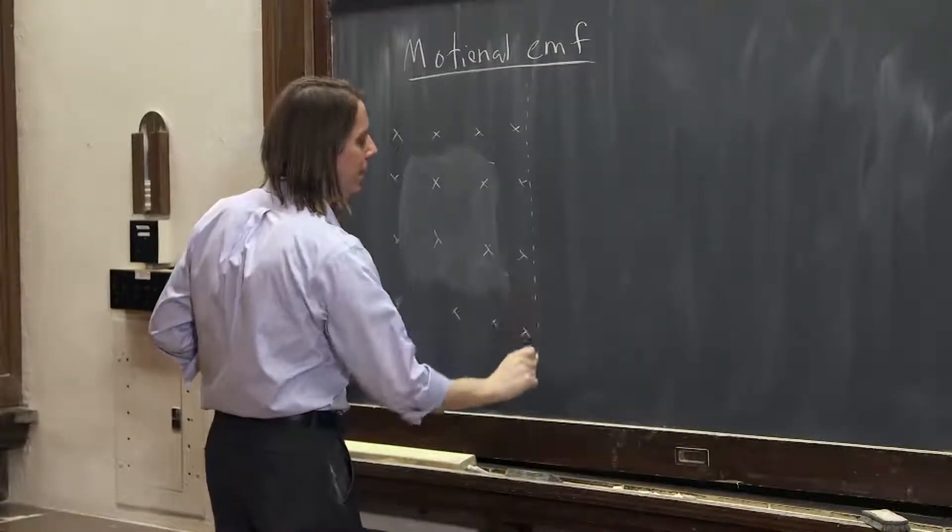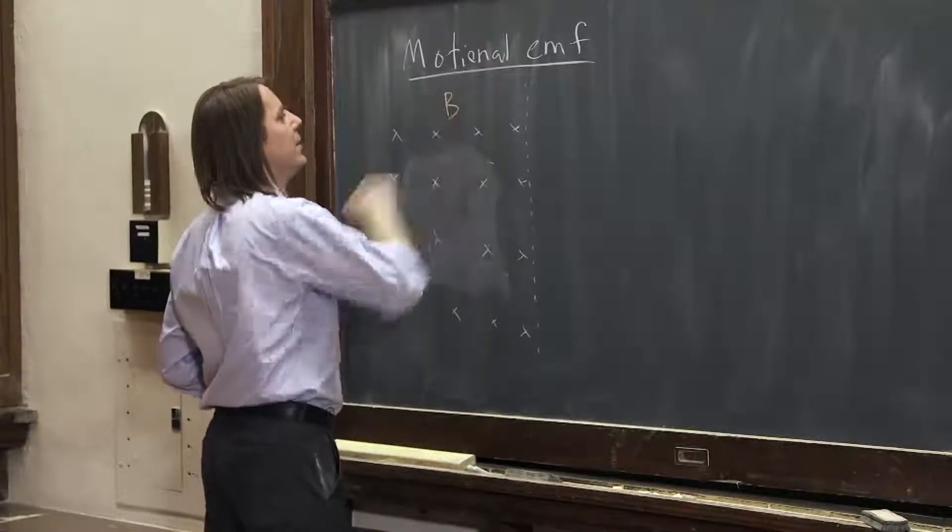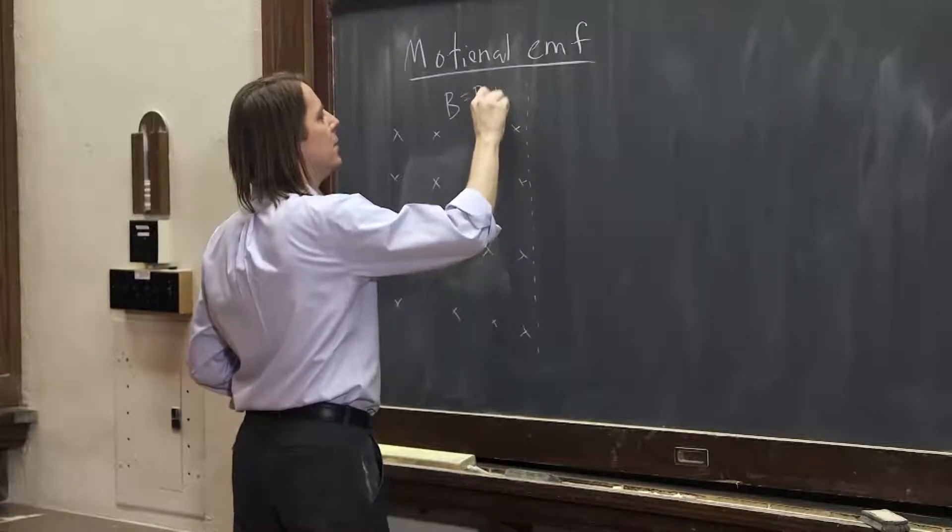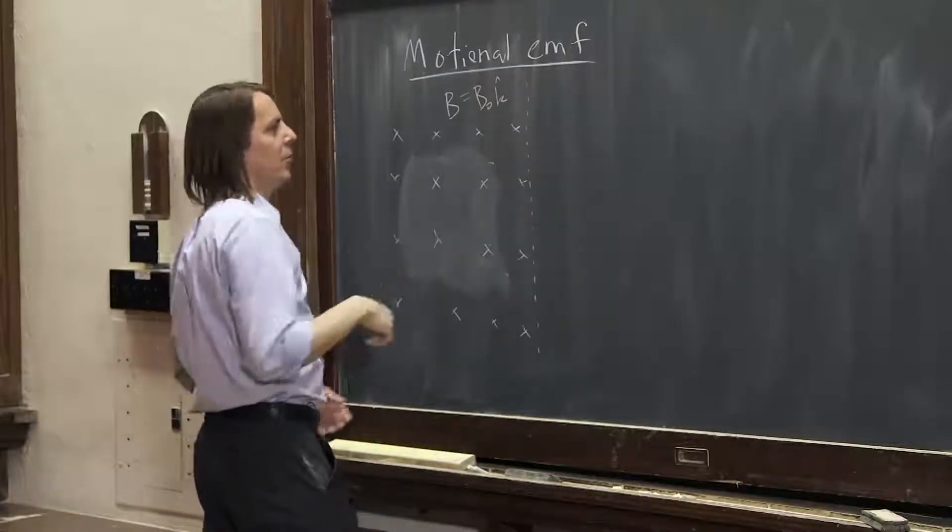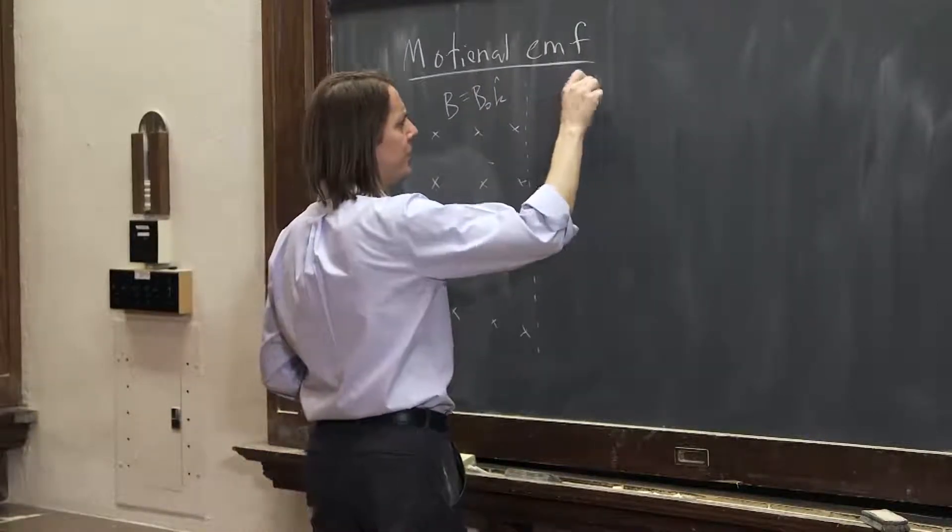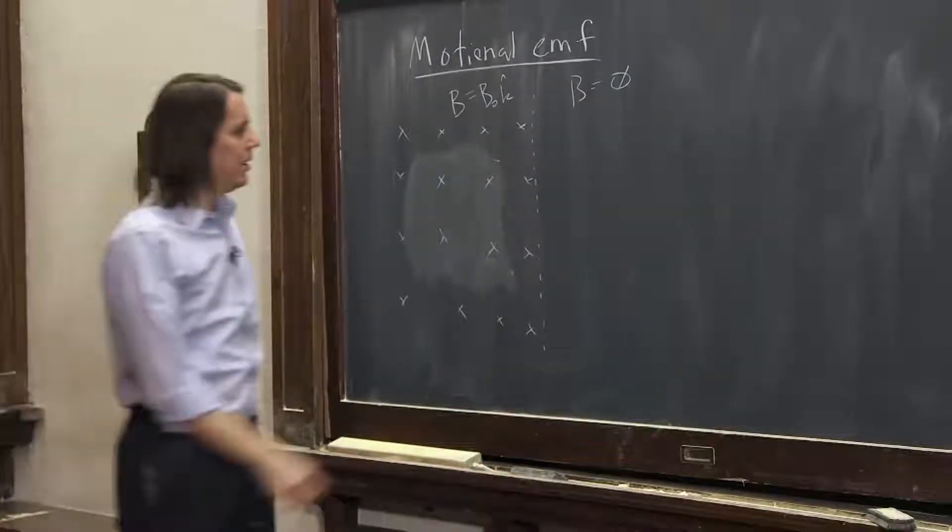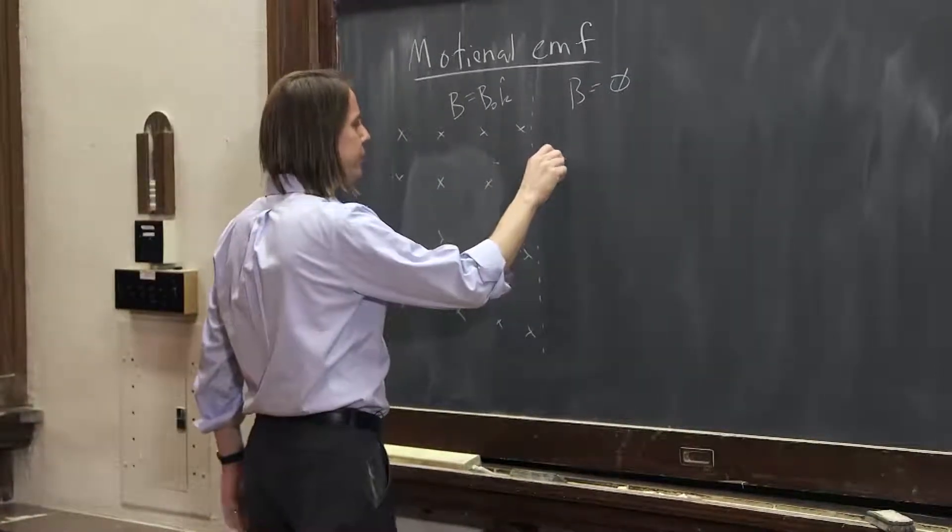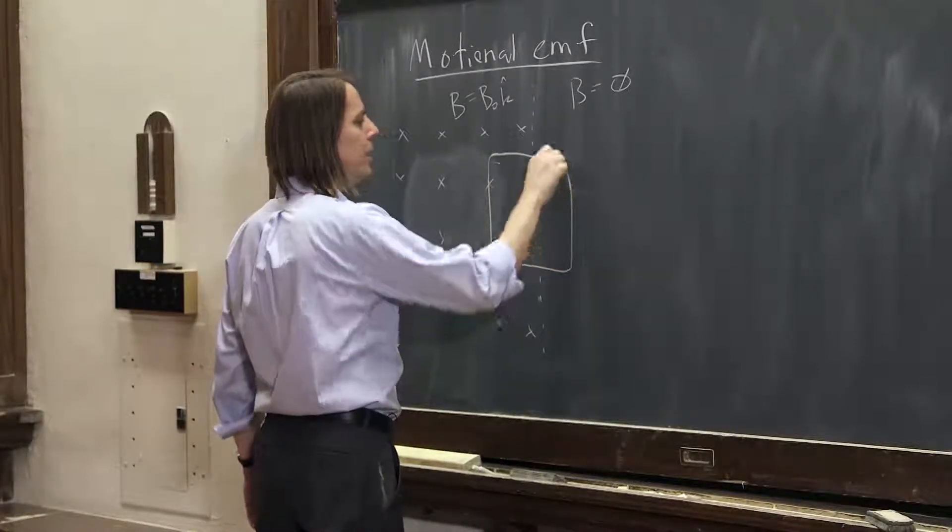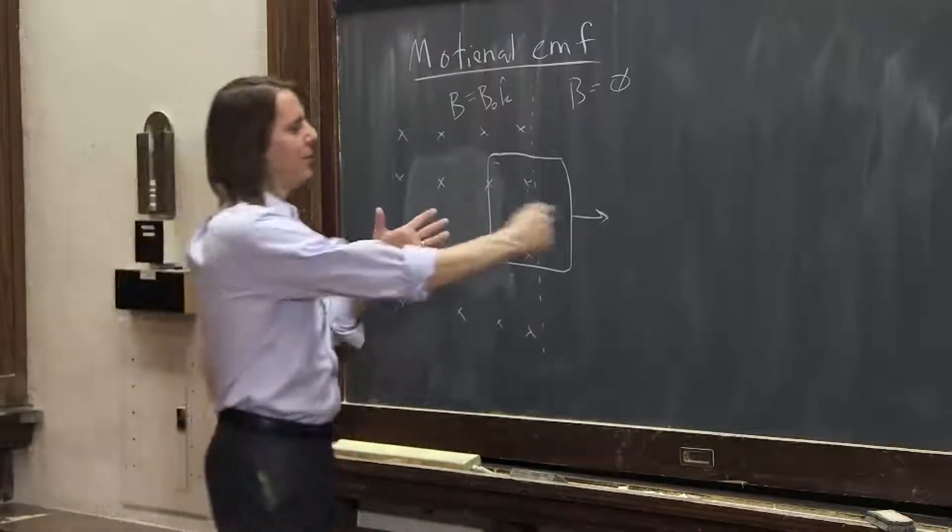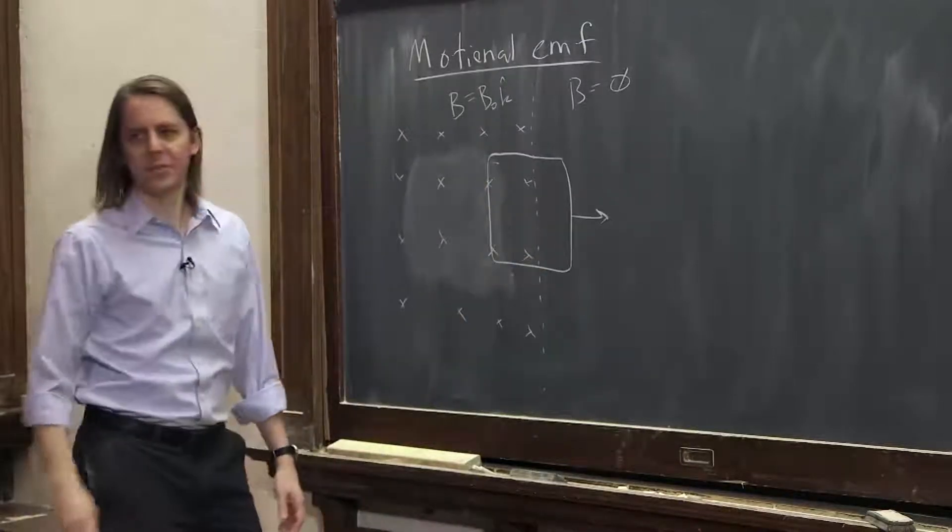So if we actually define it this way, and say this field is uniform over on this side. But the field, so here, say it equals B0 k hat, or k hat is into the board. But on this side of this boundary, it's equal to 0. So if we do that, then we could say, OK, we have a wire loop, and we're pulling it out of the field. We're able to pull it out of the field. Then you have your flux changing.